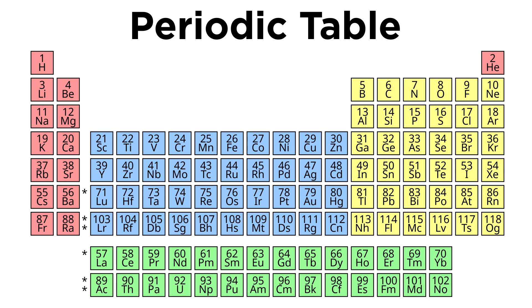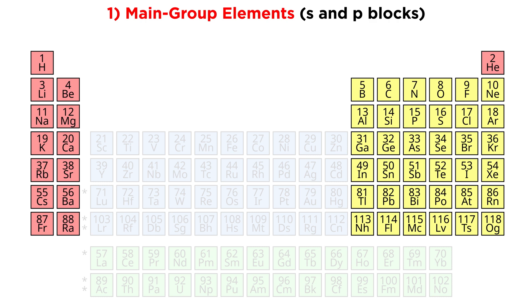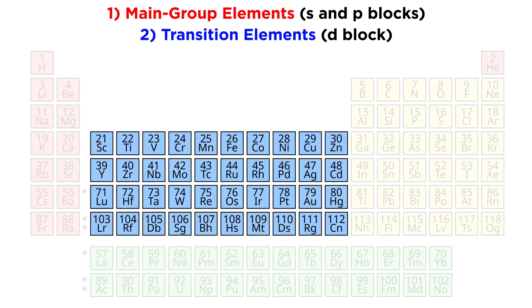This survey will proceed as follows. First we will cover the main group elements, one group at a time. Those are the elements in the S block and P block. Then we will cover the D block, or transition elements.